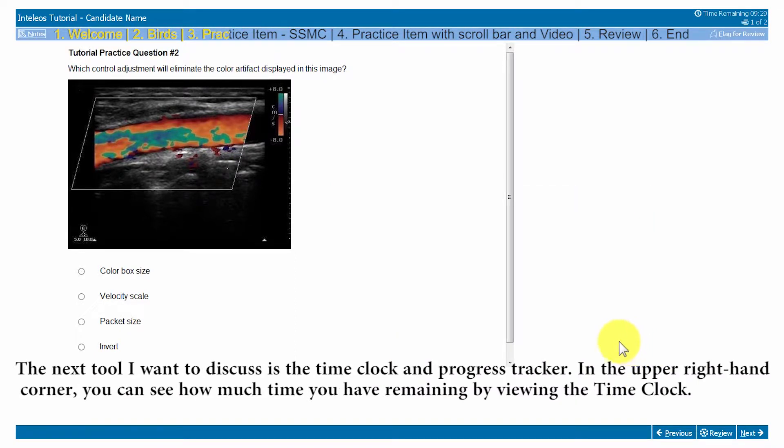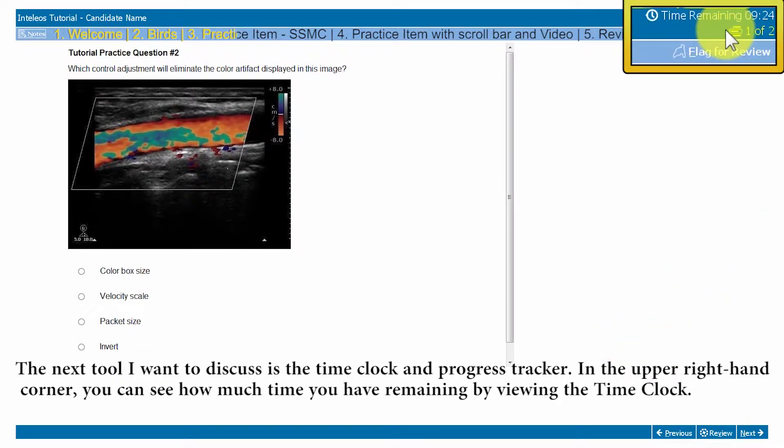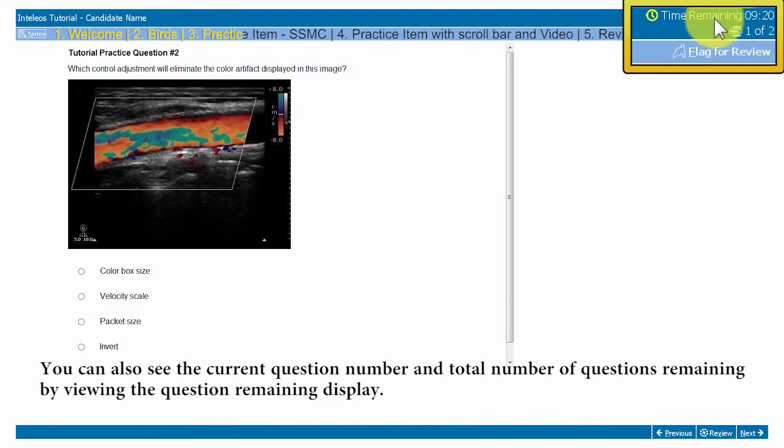The next tool I want to discuss is the time clock and progress tracker. In the upper right-hand corner, you can see how much time you have remaining by viewing the time clock. You can also see the current question number and total number of questions remaining by viewing the question remaining display.